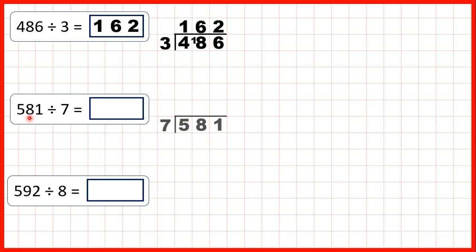Now we have 581 divided by 7. Here we can see that the first digit is less than the divisor. So what I like to do is to just take the first two digits together and divide 58 by 7.